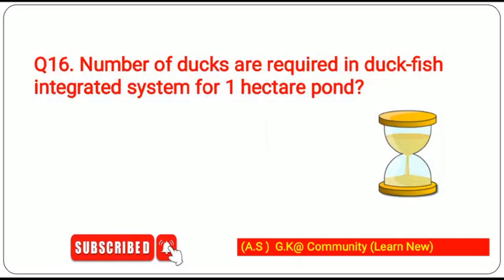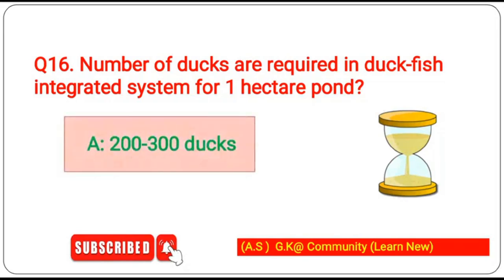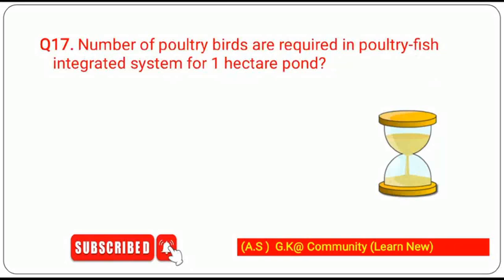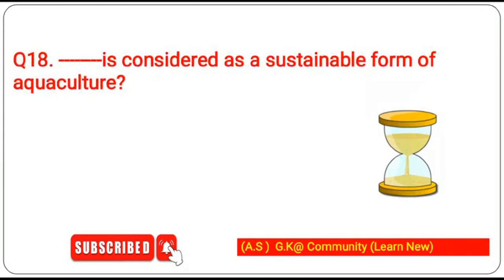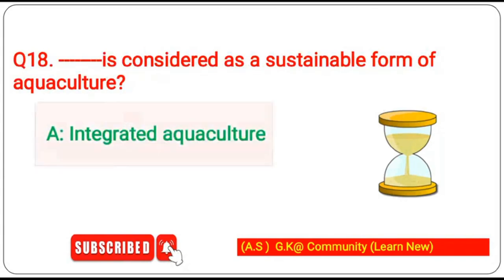Sixteenth question: number of ducks required in a duck-fish integrated system for one hectare pond — the answer is 200 to 300 ducks. Seventeenth question: number of poultry birds required in a poultry-fish integrated system for one hectare pond — the answer is 1000 birds. Eighteenth question: integrated aquaculture is considered a sustainable form of aquaculture.